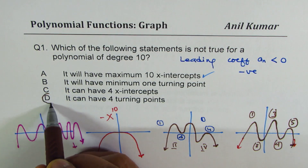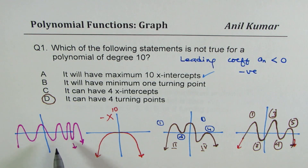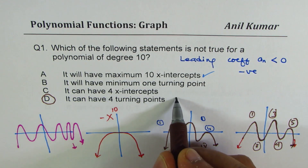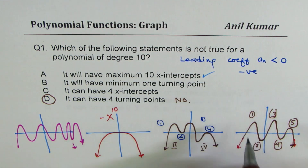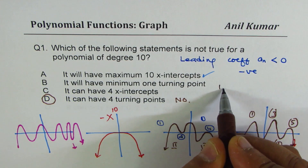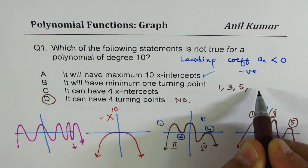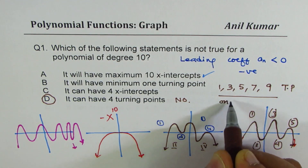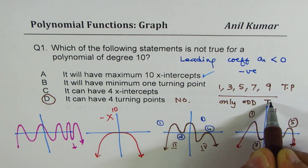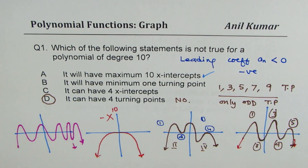So the last statement is incorrect — it cannot have 4 turns. With a negative leading coefficient and even degree, it can only have an odd number of turning points: 1, 3, 5, 7, or 9. It cannot have an even number of turning points. Therefore, option D is the right answer. I hope the concept is clear.